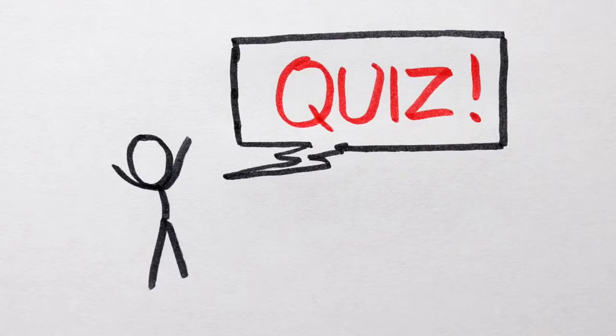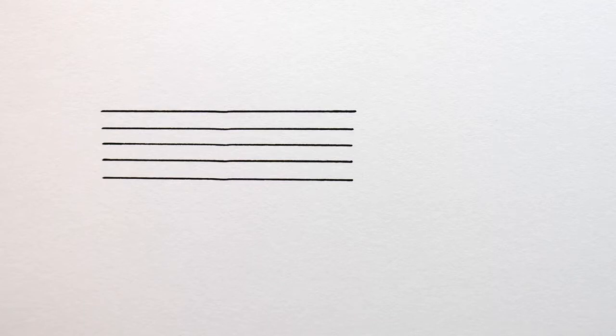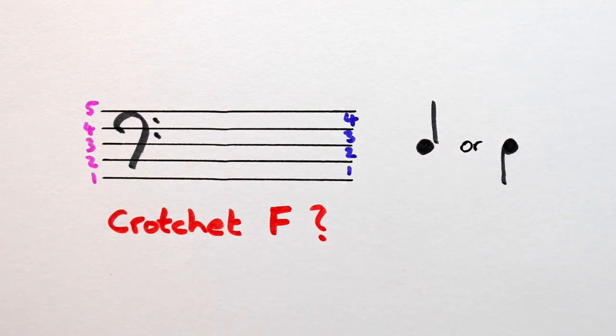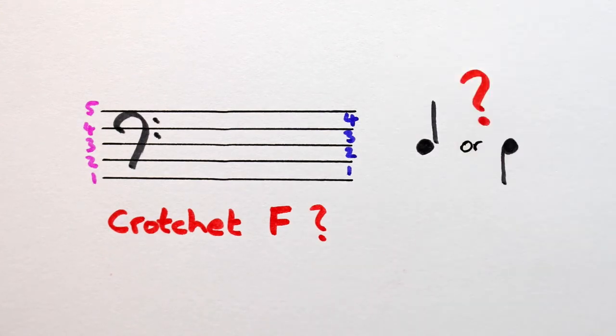Music quiz! Say I asked you to draw for me a crotchet F in the bass clef. Let me know in the comments below how you think that note should look, what line or space it should be on, and what direction the stem should go.